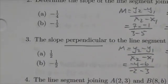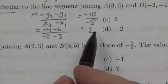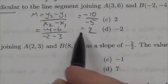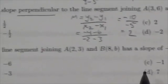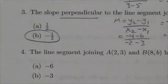But we are looking for the slope perpendicular to that. So we need to take the negative reciprocal, so now it's going to be a negative value and 1 half. So we're looking at negative 1 half, the answer is b.